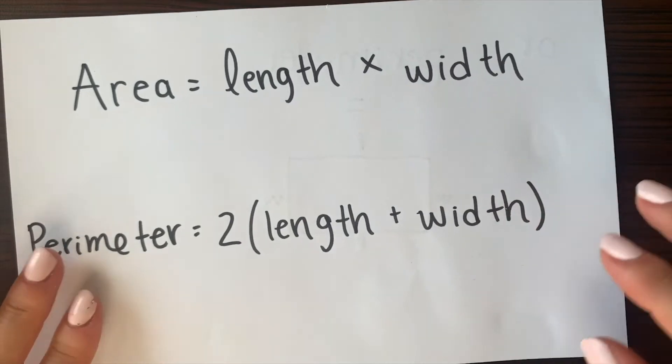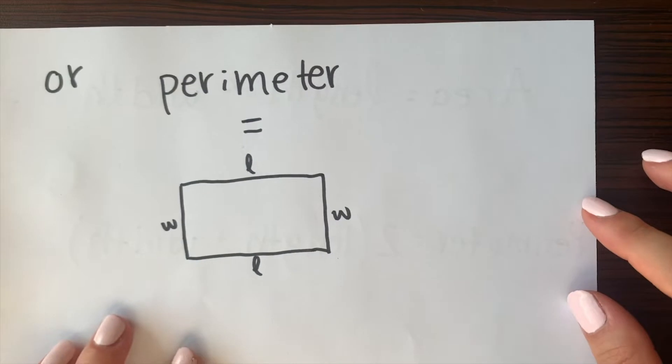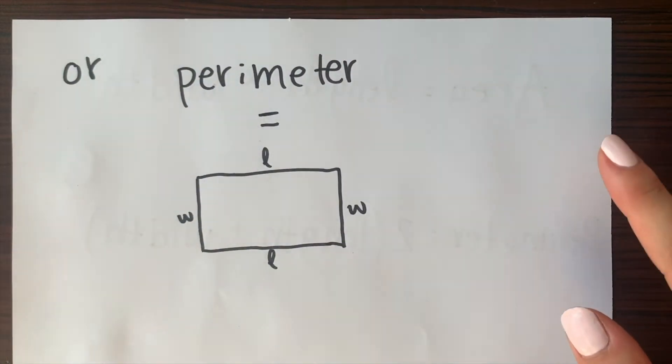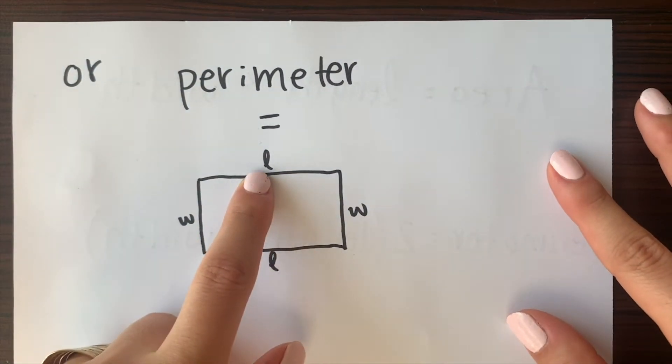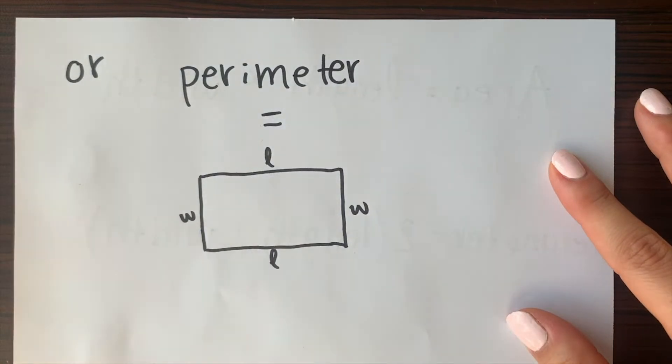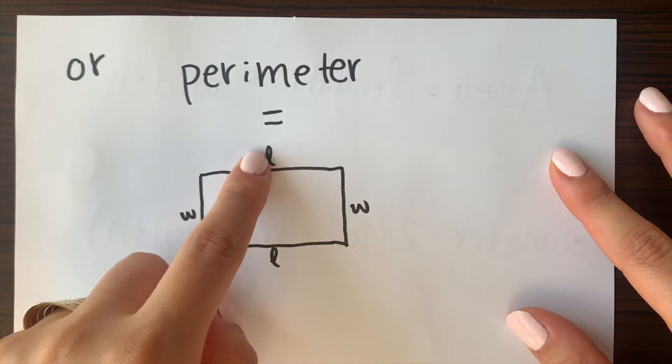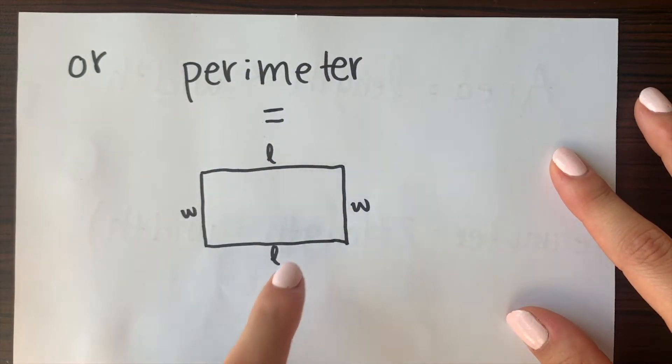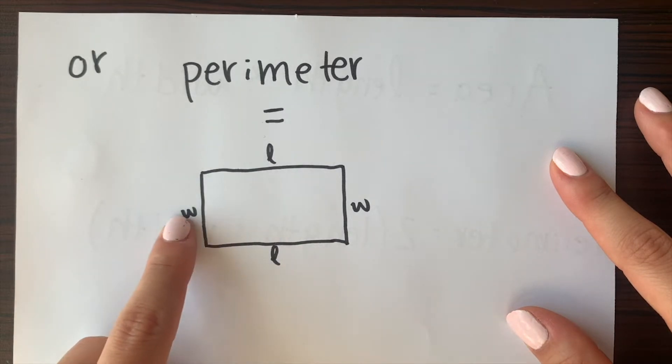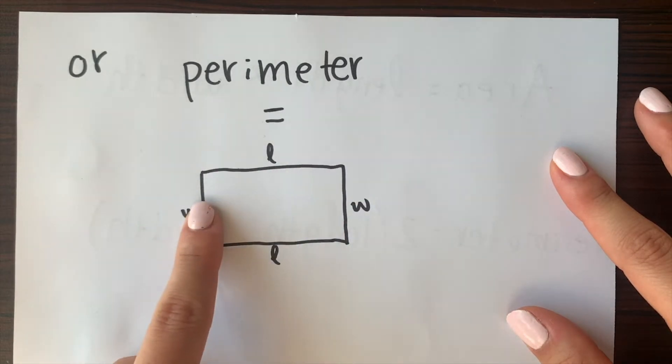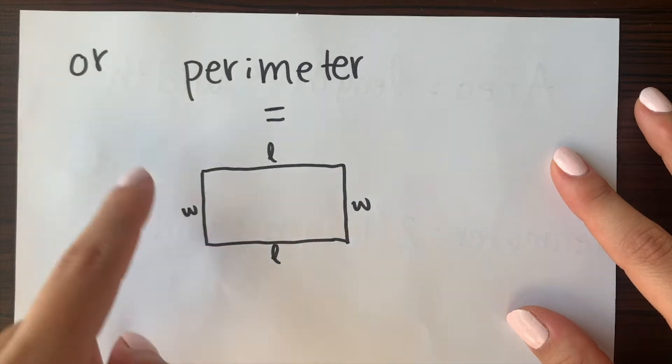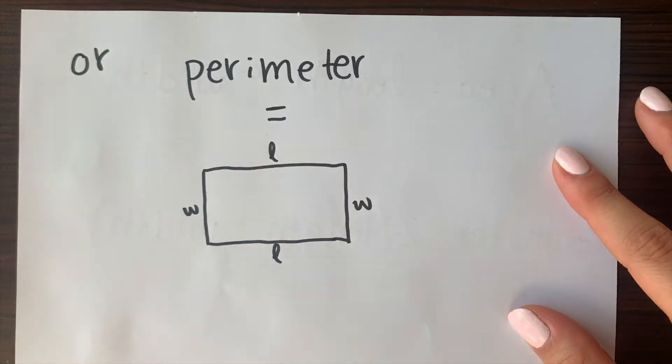Or another way that we can use to find the perimeter is by using this method right here. So the perimeter is basically asking to add every single side. So we're going to add this length plus this width plus this length plus this width. So adding all four of the values given for each side is going to give you your perimeter.